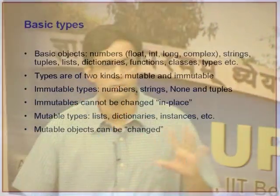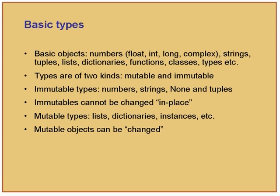In Python there are two basic kinds of data types. There are a bunch of basic objects like numbers, floating point, integers, long, complex numbers, strings, tuples, lists, dictionaries, functions, classes, and so on and so forth. These are the basic object types.